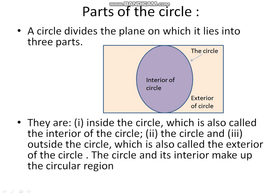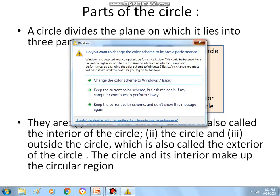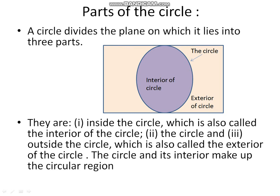Parts of the circle: a circle divides the plane into three parts. Those three parts are the interior of the circle, the circle itself, and the exterior of the circle. The interior is the inside of the circle, and the outside of the circle is called the exterior of the circle.